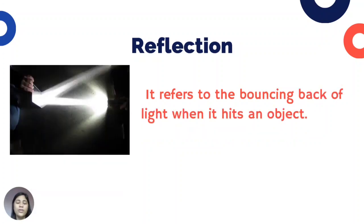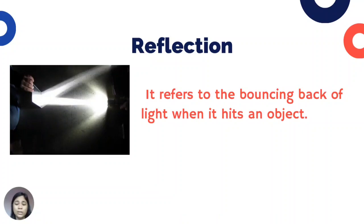Reflection refers to the bouncing back of light when it hits an object. Some objects with flat surfaces, like mirrors, reflect light in a straight, predictable way. Some objects with uneven surfaces, like rocks, reflect light in a scattered way.